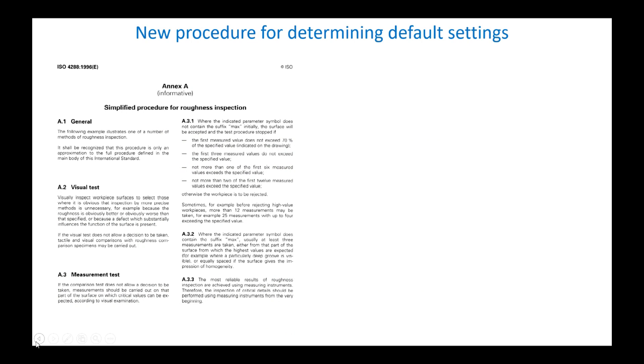In the ISO 4288 standard, there was a procedure for determining the cutoff suitable for the profile, and this resulted in a certain number of default settings to be used in the absence of explicit specification. The procedure varied depending on whether we were dealing with a periodic profile or not. The main problem with this method was that the verification dictated default settings to the specification, which contradicts the basic rules of ISO GPS.